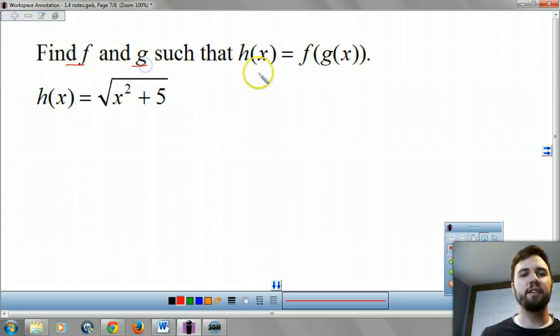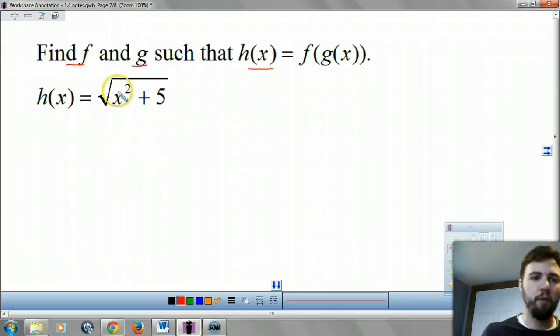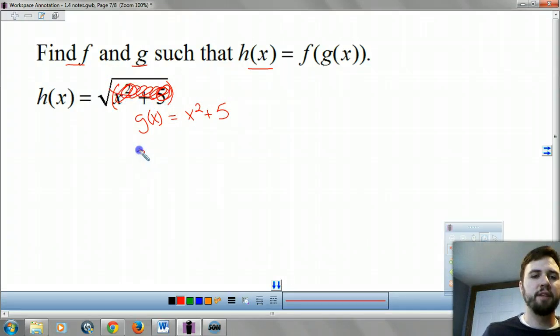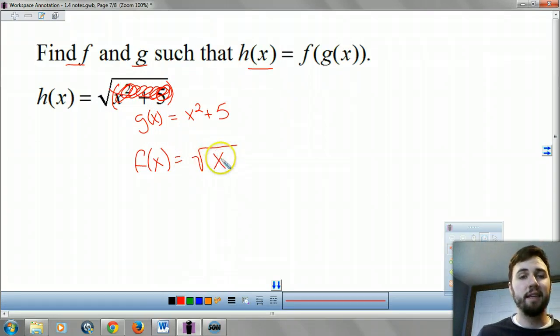This one's find f and g such that h of x equals f of g of x. So what you're looking for is two functions. There's two ways to do this one. Way one is take this piece out of the square root, right? And say this is your g of x. So you're saying g of x is x squared plus 5. And then when you take them out, you're left with an empty square root. So inside your f of x, you get that empty square root, and you have to fill it in with an x. These are tough.